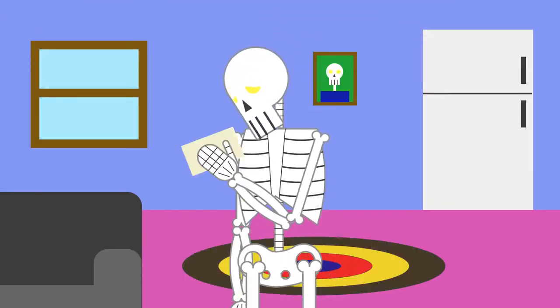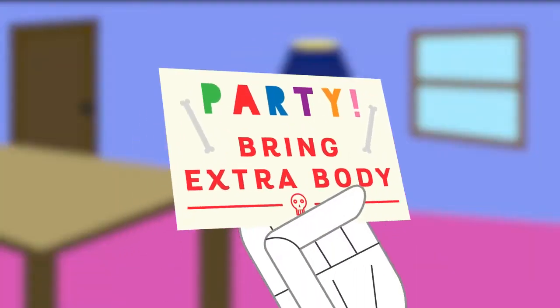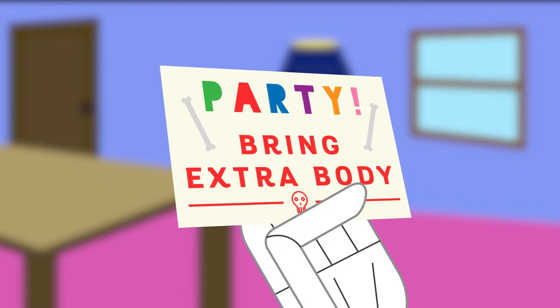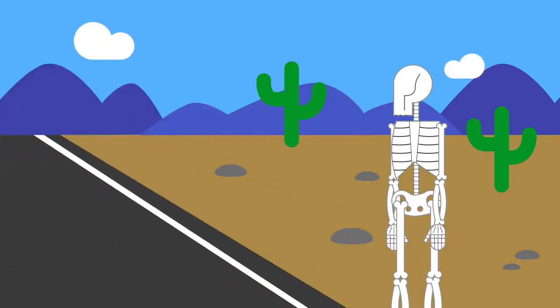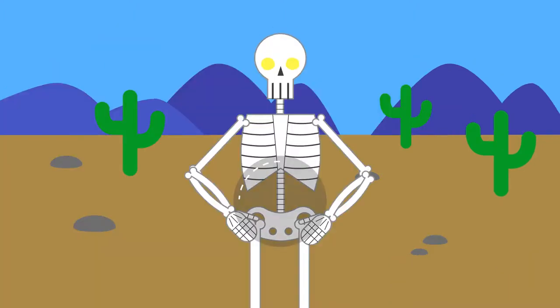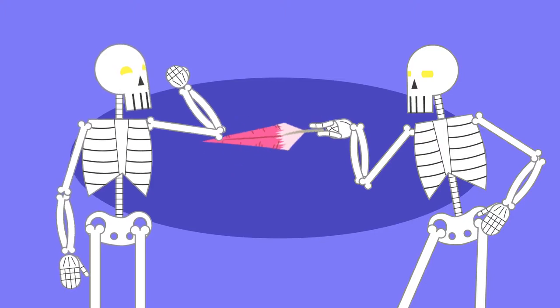Okay, so why didn't the skeleton go to the party? Because he had no body to go with. What about why didn't the skeleton cross the road? Because he didn't have the guts.